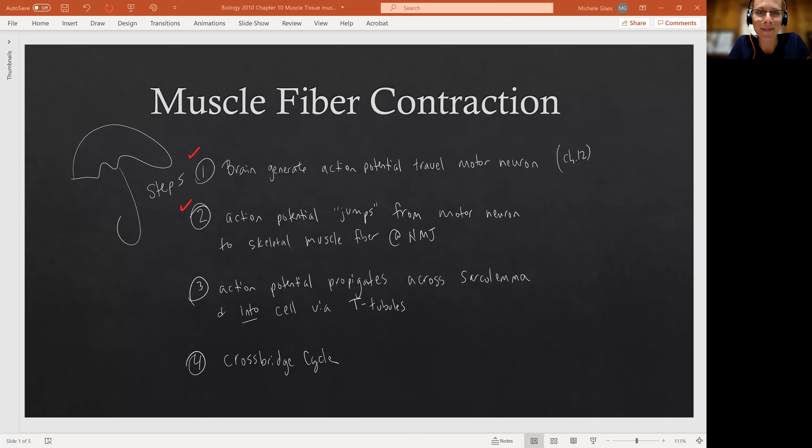Hello, my lovely physiologist, Michelle Glass here, and we're back right where we left off looking at muscle fiber contraction. Remember, we have these four big umbrella steps to help guide us through. We're glossing over big step one for now. We need to know that the brain is generating the action potential and it's traveling down the motor neuron, but the details of that we'll pick up in the future.